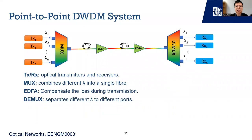Now let's look at a simple point-to-point DWDM system. TX and RX refer to optical transmitter and receiver. Transmitters send optical signals with different wavelengths, which are combined into a fiber via a multiplexer. During transmission, the signal suffers fiber loss. Therefore, EDFA, which is a type of optical amplifier, is used to compensate for fiber loss in long-distance optical communication. The demultiplexer separates optical signals to the final destination according to their assigned wavelengths. With this setup, TX1 establishes one-way communication with RX1, and similarly TXN establishes a link with RXN.